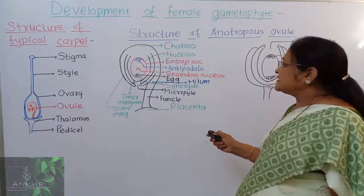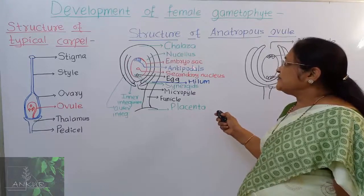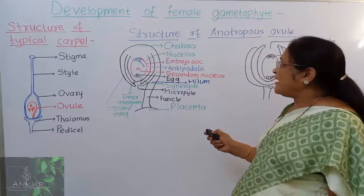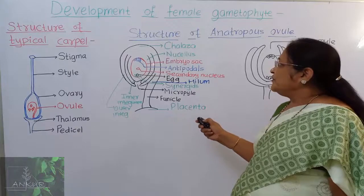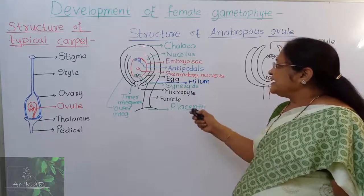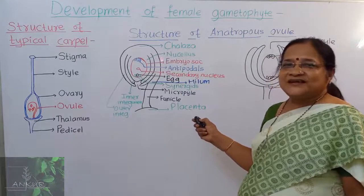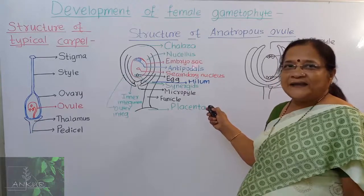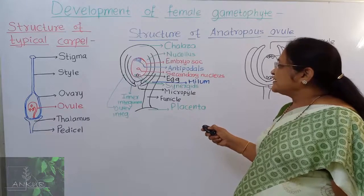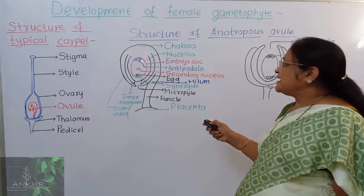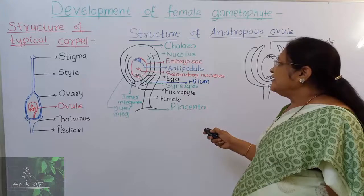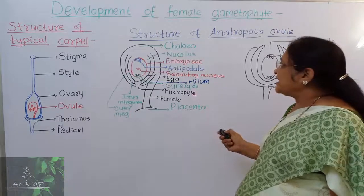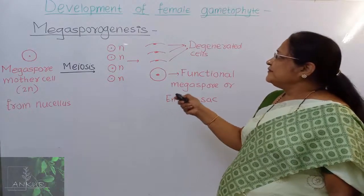Inside the nucellus tissue there is the formation of the embryo sac. We will study this through megasporogenesis and development of the female gametophyte. In the young ovule you get only the nucellus tissue, which is diploid. Later on, there is the formation of the embryo sac, in which you get antipodal cells towards the chalazal end, two synergids and one egg cell towards the micropylar end, and this total structure is called the egg apparatus.